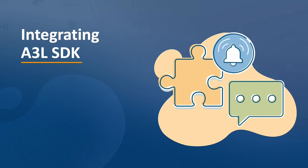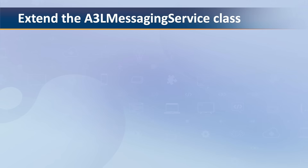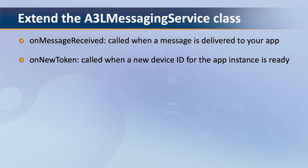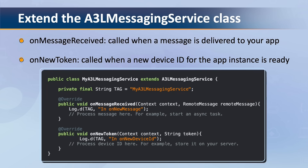Now that you have implemented the SDK, how do you integrate it with your project? The first step is to extend from the A3L messaging service class, which is part of the A3L messaging SDK. This allows your app to receive messages. You will need to override two methods: onMessageReceived, which is called when a message is delivered to your app instance, and onNewToken, which is called when a device ID for the app instance is ready. The following code shows an example of the implementation with a class named myA3LMessagingService.